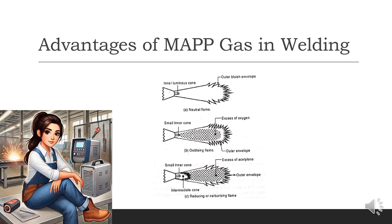Regulators control the gas pressure coming from the cylinders. Hoses deliver the gases to the torch. The mixing torch combines oxygen and fuel gas in the proper ratio before ignition. The welding tip directs and shapes the flame for welding. Two of the most commonly used fuel gases for OFW are acetylene and MAP gas.